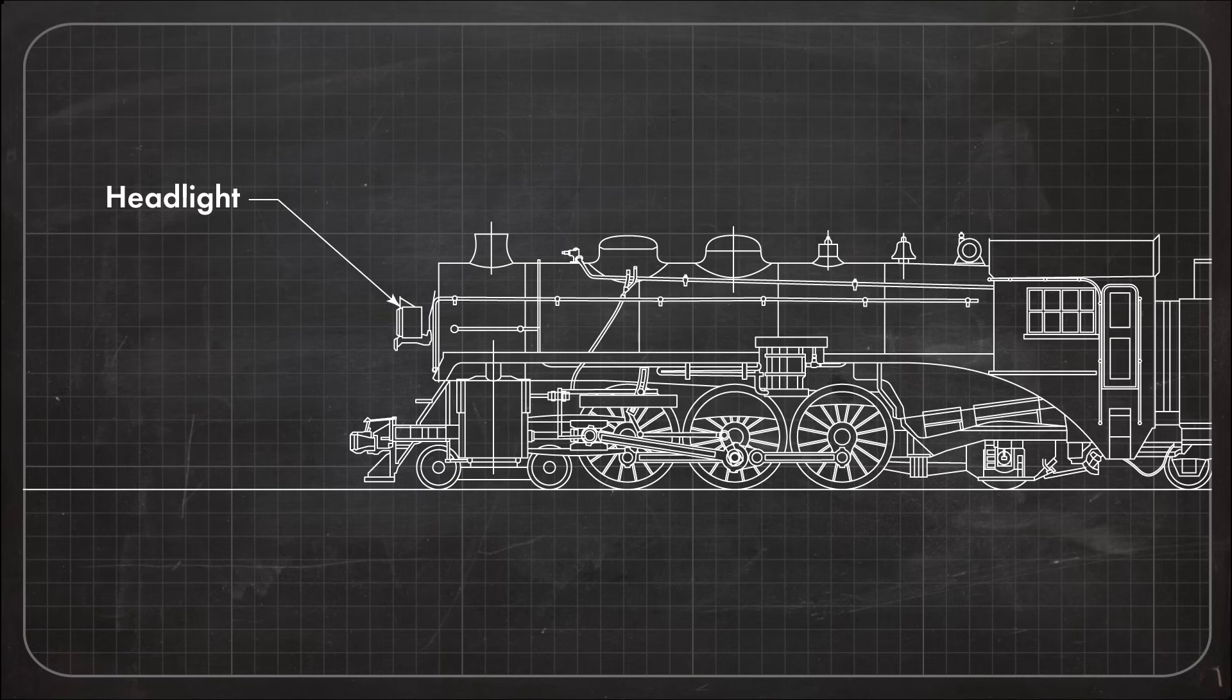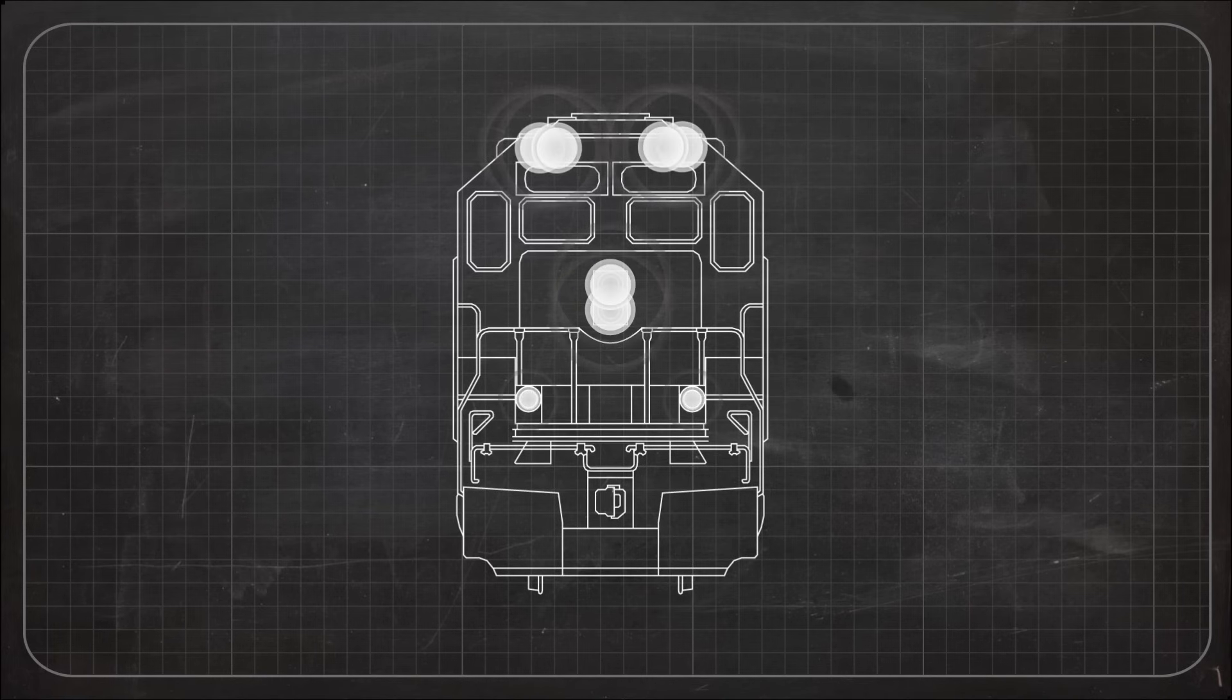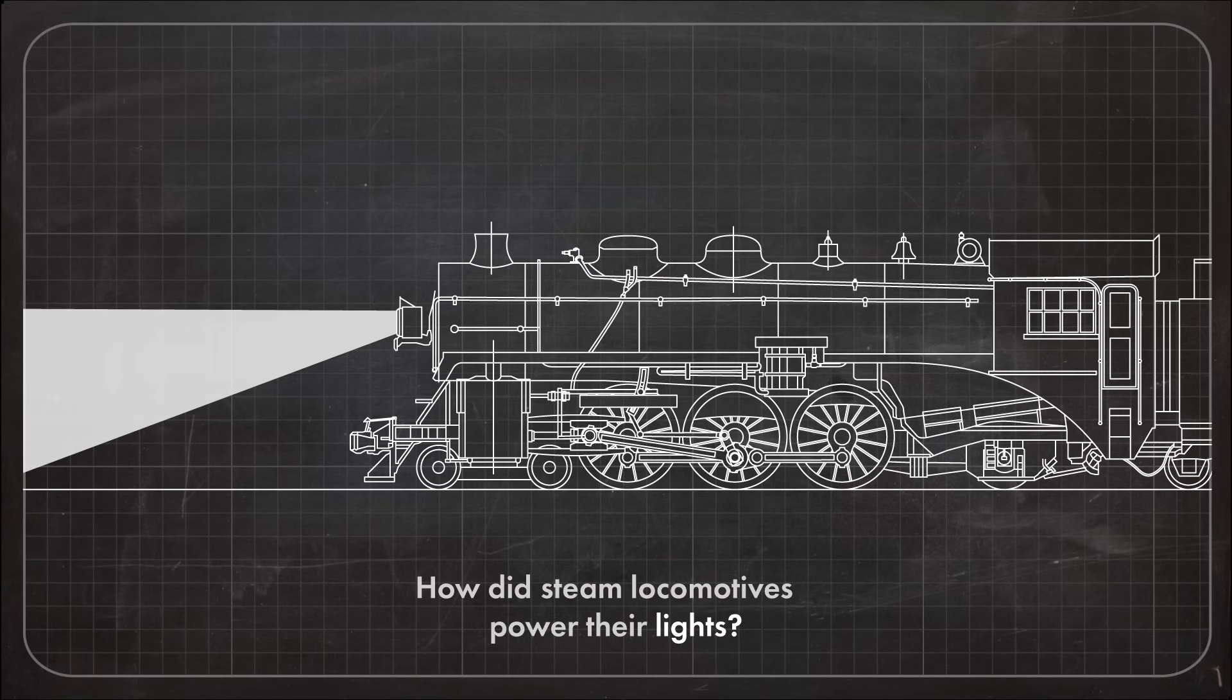Steam locomotives need lights to illuminate tracks at night, warn others of their approach, and signal their operations. While trains today use modern electrical systems, how did steam locomotives power their lights?